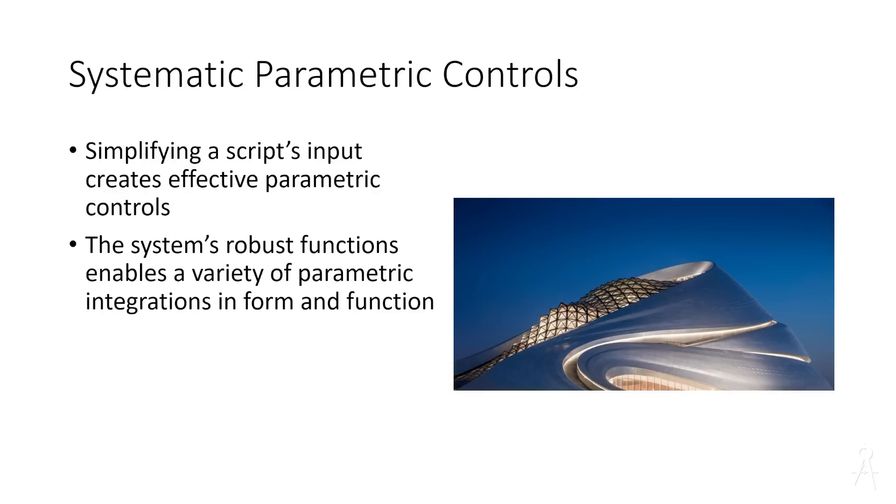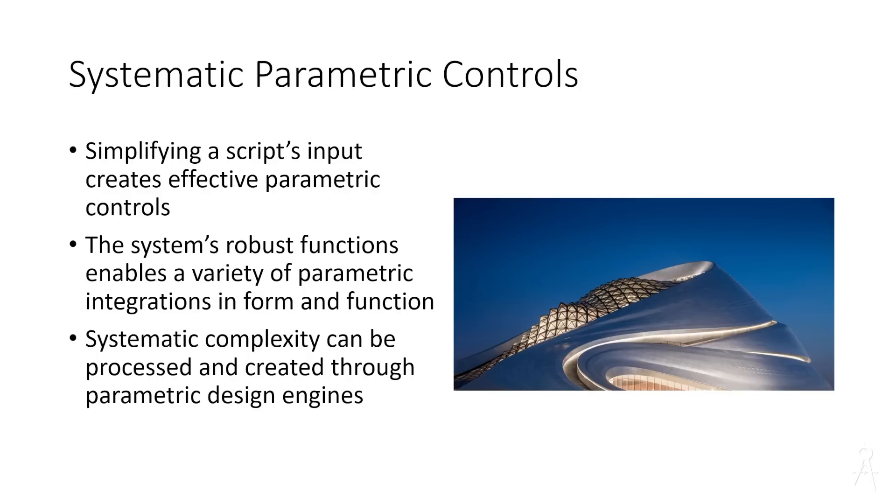Now, this system's robust function enables a variety of parametric integrations in the form of function. However, these all have to be sort of calculated. It's not just maybe it creates the form, maybe we decided to work with that surface, but the different types of systems that are working in there probably had to be created in a parametric way. So the idea is we have figured out how those are connected with parametric integrations. Systematic complexity can be processed and created through parametric design engines. Now, that's going to be key. That means that our complexity being solved that we are looking at before, maybe with biomimetic systems like maybe a sunflower seed or maybe how sound waves work, those are now very easily solved when we break them down into algorithm solvers to maybe develop that form or understand it. Then we create those controls at the end.